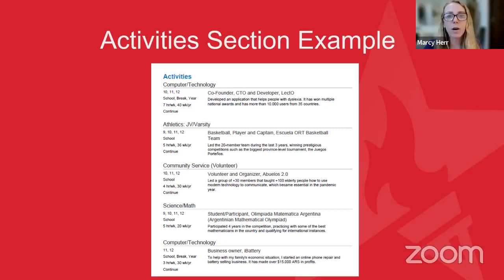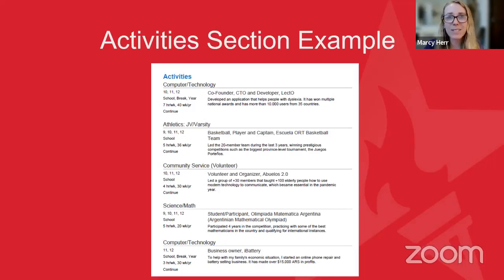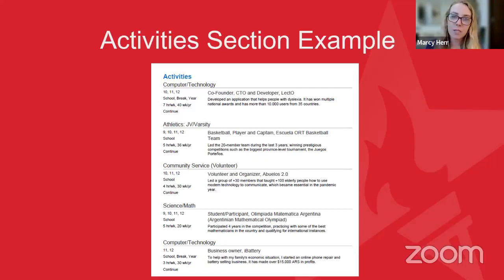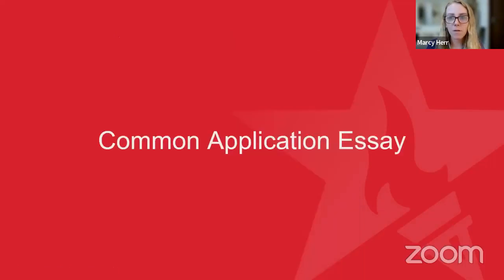We can see a student example here: this student was involved in a computer club, he developed an app, he was on the basketball team and was the captain, he was involved in community service, the math Olympiads in Argentina, and he also created his own computer battery club. In the description of each activity, you only have a couple of sentences to share about your involvement specifically. Not just 'I was on the basketball team for four years,' but rather 'I led the team' — because we want to see your character. Now I know this student was a leader.